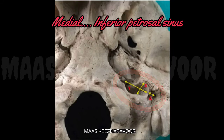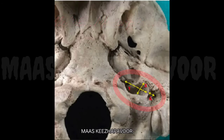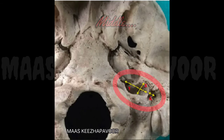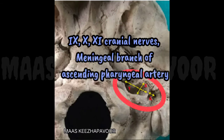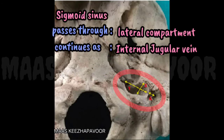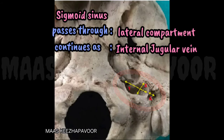The structure passing through the medial compartment of the jugular foramen is the inferior petrous sinus. This is the only sinus coming out of the skull and joins with the internal jugular vein. In the middle compartment, the 9th, 10th and 11th cranial nerves and the meningeal branch of the ascending pharyngeal artery pass. The sigmoid sinus passes through the lateral compartment and continues as the internal jugular vein.